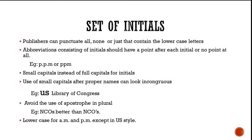Let's check the rules regarding the set of initials. Either publishers can punctuate all, or they may not punctuate after the initials. Sometimes publishers punctuate only when lowercase letters are used; when uppercase is used, they do not punctuate. An abbreviation consisting of initials should have a point after each initial or no point at all. For example, P.P.M. is one way, or it can be written as PPM without any point. However, it would be wrong to write PPM with only a trailing dot — that is not the rule followed.